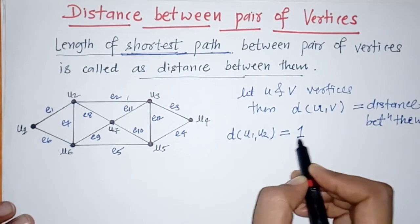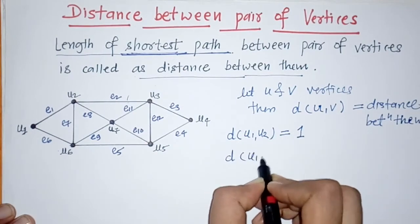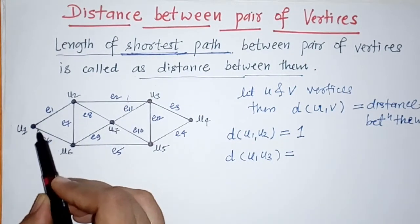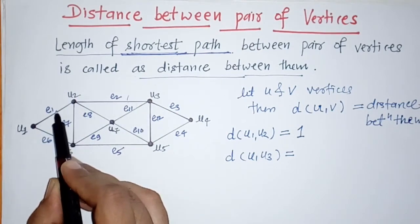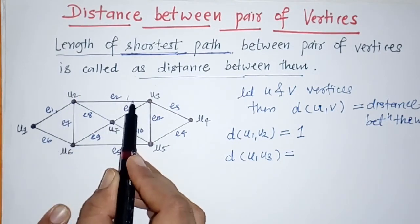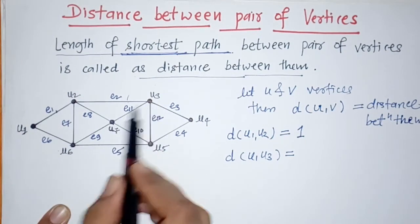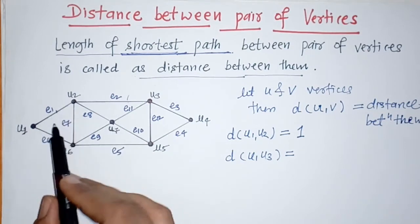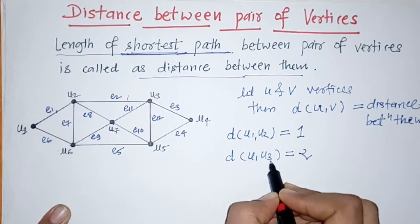Similarly, for distance between u1 and u3, we can travel from u1 to u3 via vertex u2 using edges e1 and e2, giving a path of length 2. Alternatively, we can travel via u1-u6-u7-u3, giving a path of length 4. Since we need the shortest path, the distance between u1 and u3 is 2.